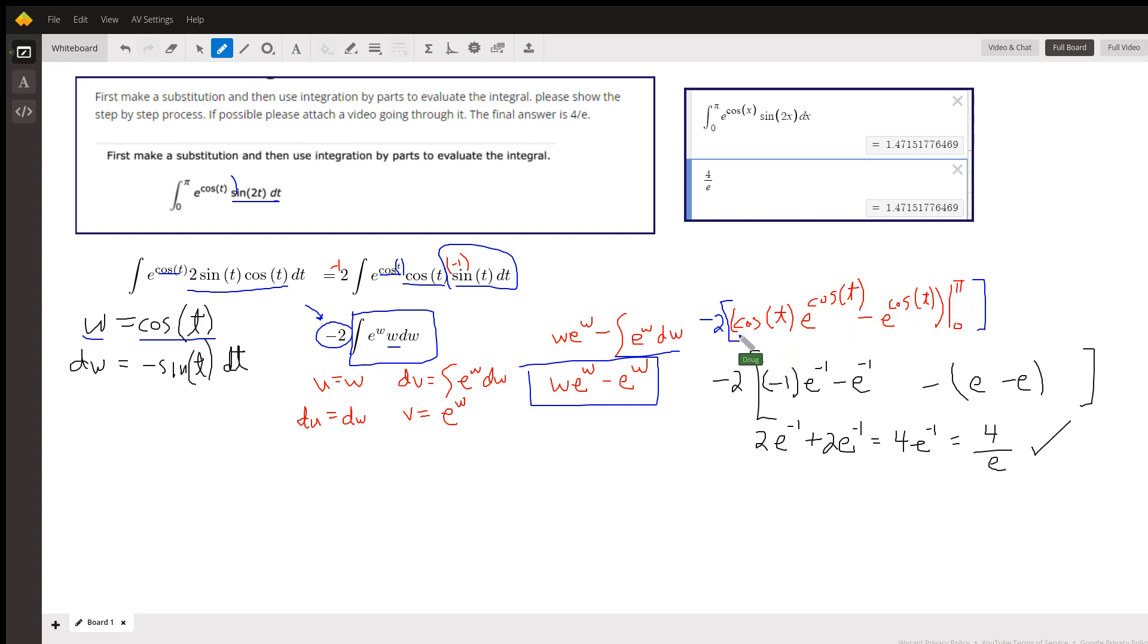Put π in for t. We get negative 1 e to the minus 1 minus e to the minus 1, minus we'll put...